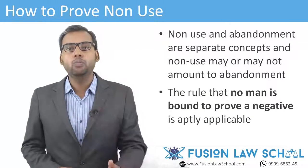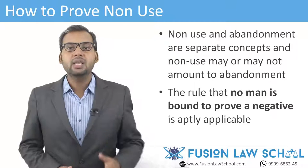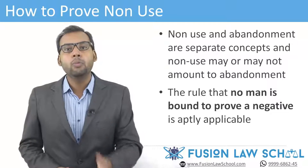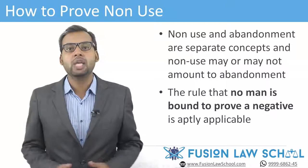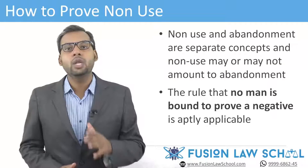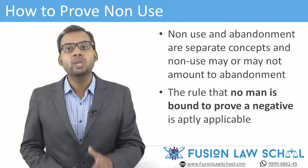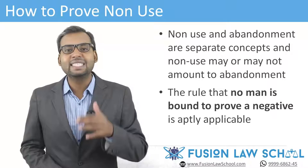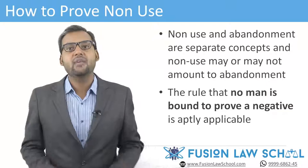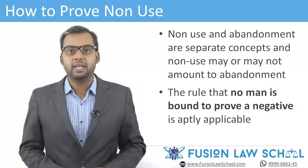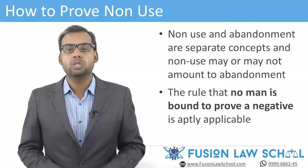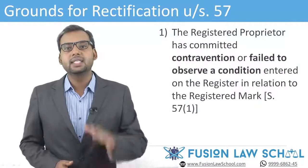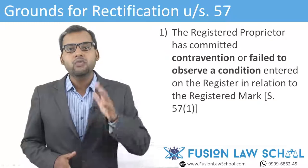The next topic is how to prove non-use in a rectification proceeding. Non-use and abandonment of trademark are separate concepts, and non-use may or may not amount to abandonment. There is a general rule in law that no man is bound to prove a negative, and this rule is aptly applicable while proving non-use. The applicant must establish a prima facie case of non-use, and thereafter the onus shifts on the registered proprietor to prove that he or she has in fact used the mark.